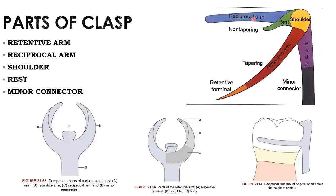The shoulder connects the body to the clasp terminal and provides stabilization against horizontal forces.